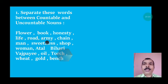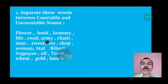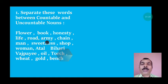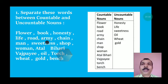Exercise 1: Separate these words between countable and uncountable nouns. Words are: flower, book, honesty, life, road, army, chain, man, sweetness, shop, Bowman, Atal Bihari Vajpayee, oil, torch, wheat, gold, bank.